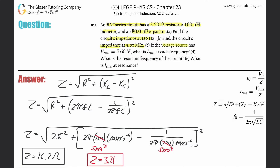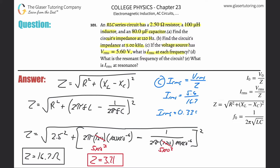Letter C: if the voltage source has an RMS voltage of 560 volts, what is the RMS current at each frequency? The formula is: RMS current equals RMS voltage divided by impedance. So for the first frequency: 5.6 divided by 16.7 — using the exact value — works out to be about 0.335 amps.